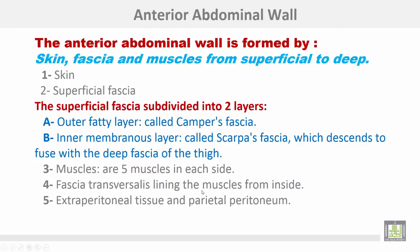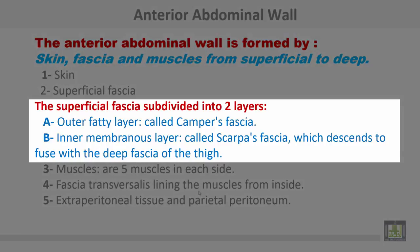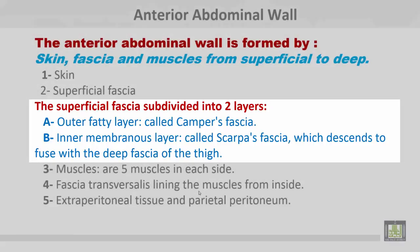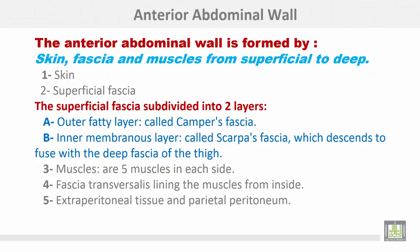The anterior abdominal wall is formed by, from superficial to deep: skin; superficial fascia, which is subdivided into an outer fatty layer called Camper's fascia and an inner membranous layer called Scarpa's fascia, which descends to fuse with the deep fascia of the thigh; then five muscles on each side; fascia transversalis lining the muscles from inside; and extraperitoneal tissue and parietal peritoneum.